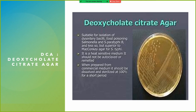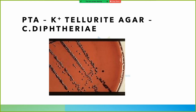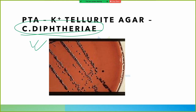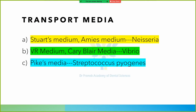Deoxycholate citrate agar is suitable for isolation of enteric bacilli including Salmonella paratyphi B and is less so but superior to MacConkey agar for Salmonella typhi. Potassium tellurite agar is used for Corynebacterium diphtheriae.